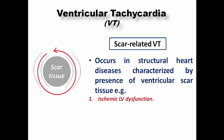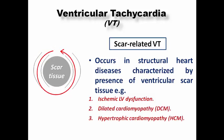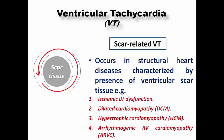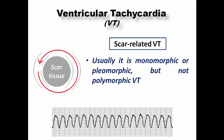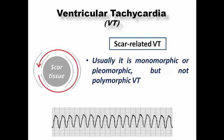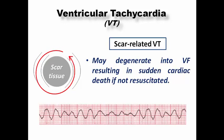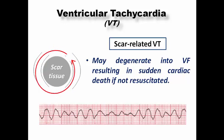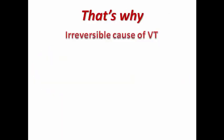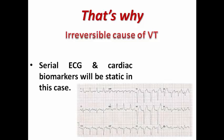The most common structural heart disease causing VT is ischemic LV dysfunction, but others include dilated cardiomyopathy, hypertrophic cardiomyopathy, and arrhythmogenic RV cardiomyopathy. Scar-related VT is usually monomorphic or sometimes pleomorphic showing more than one morphology, and may degenerate into VF resulting in sudden cardiac death if not resuscitated. Therefore structural heart diseases are associated with a higher rate of sudden cardiac death, and scar-related VT can be considered an irreversible cause.